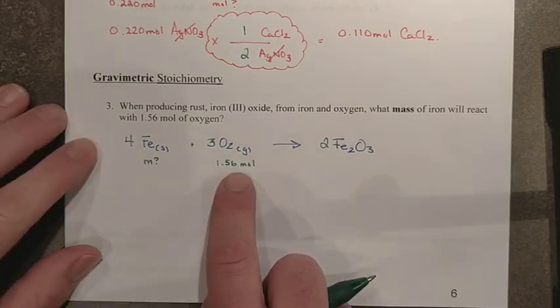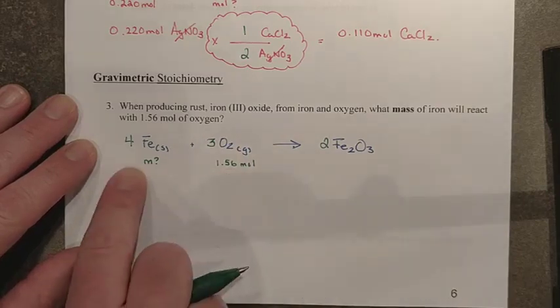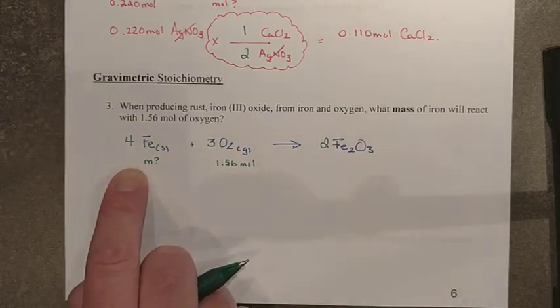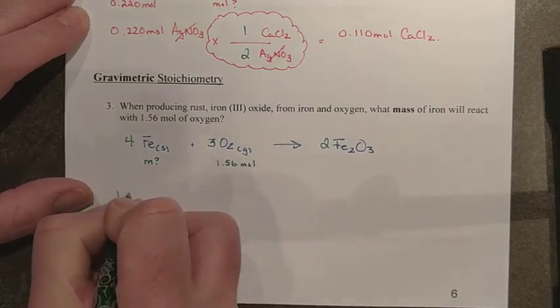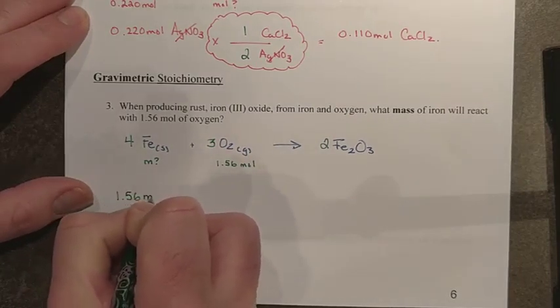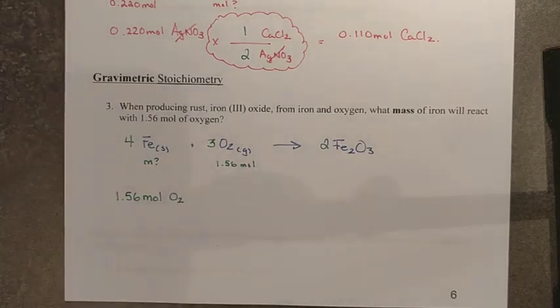All right. Where do we begin? Well, we have a mole quantity from something that is given to us and we're being asked for what mass of iron is required to use all of this. So start out again. We've been keeping it easy so far with the mole quantities and you have, pardon me, 1.56 moles of O₂.